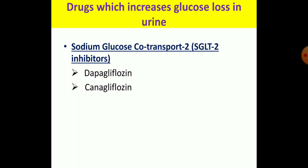The drugs which increase glucose loss in the urine act on sodium-glucose co-transporter 2, and these are SGLT2 inhibitors: dapagliflozin and canagliflozin. In summary: drugs that increase insulin release are insulin secretagogues; drugs that decrease insulin resistance are insulin sensitizers; metformin decreases hepatic glucose output; alpha-glucosidase inhibitors decrease carbohydrate absorption from the GI tract; and SGLT2 inhibitors increase glucose loss in the urine.